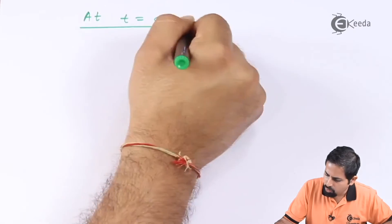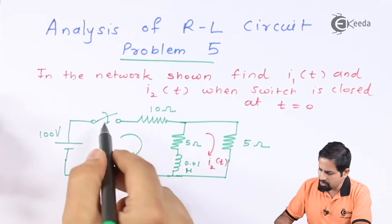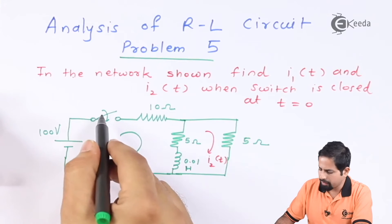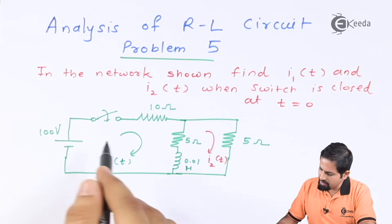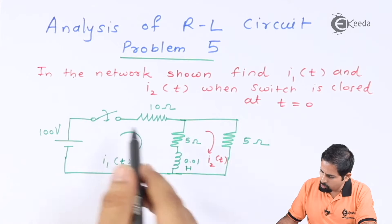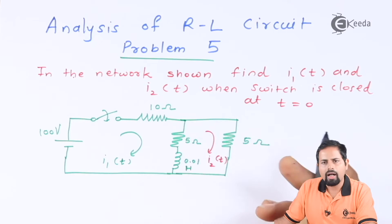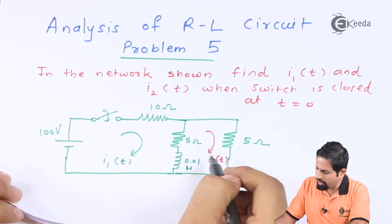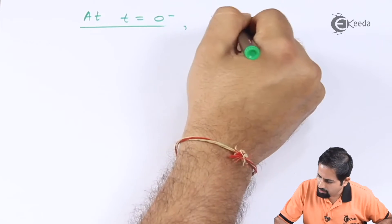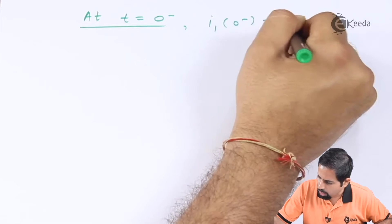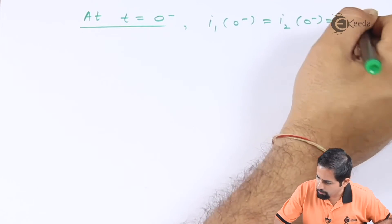At time t=0 minus, the switch is open because the switch gets closed at t=0. When the switch is open, both currents are 0. So we can write: i1(0⁻) = i2(0⁻) = 0 amperes.